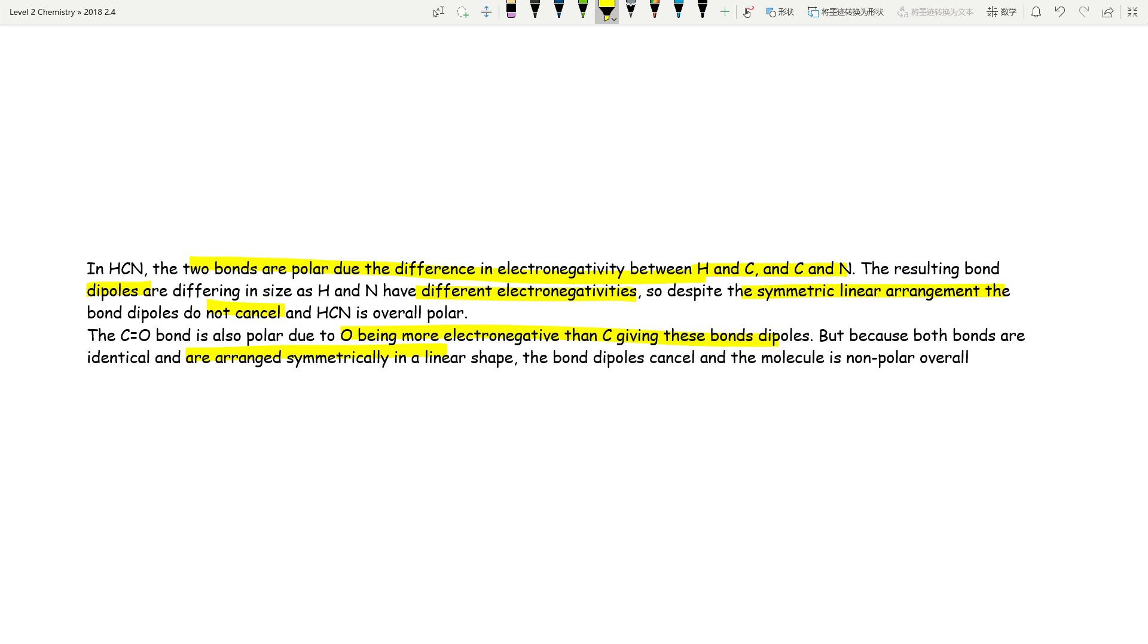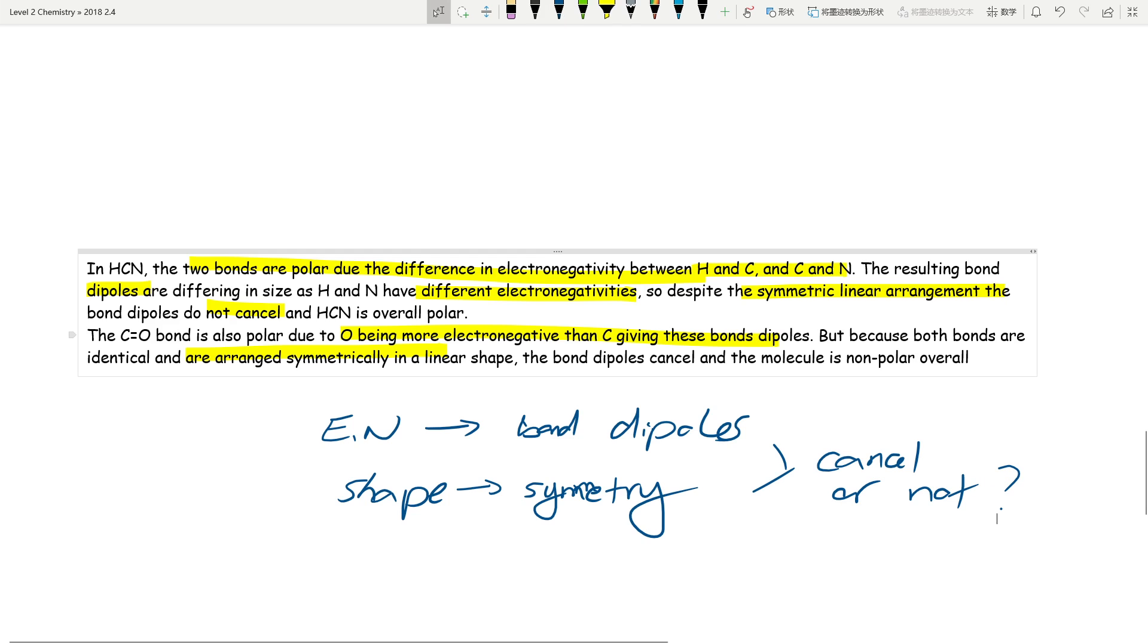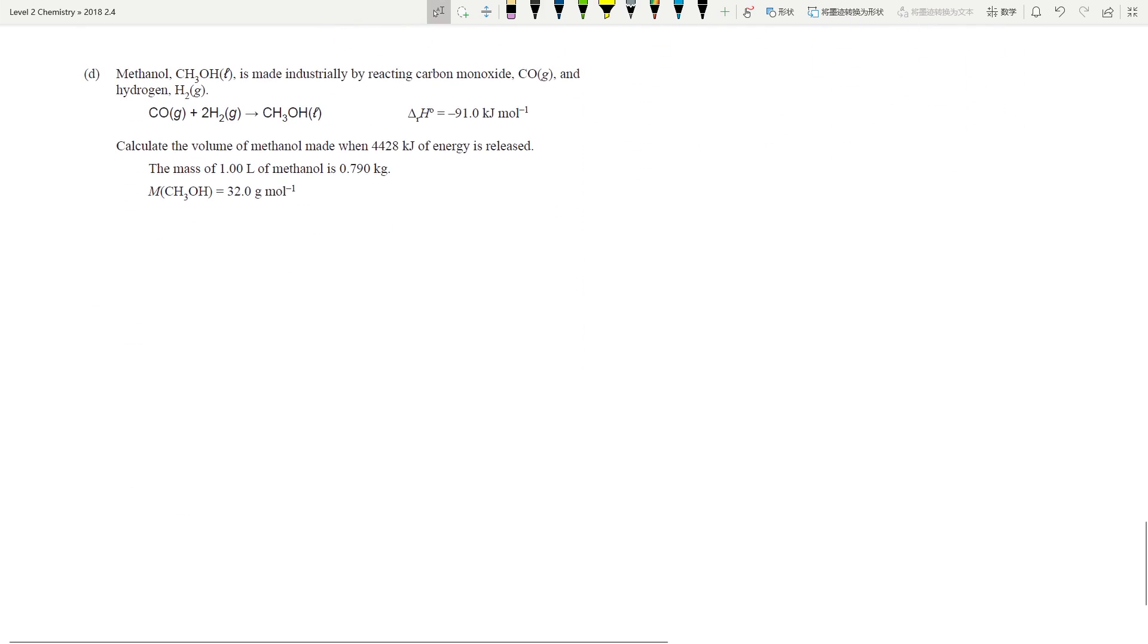But if you look at the answers, you do need to talk about the electronegativity difference because I just abbreviated it. So you need to talk about the significant electronegativity difference between CH and CN. Therefore, you've got two different types of dipoles, two different electronegativities. So even though you have a symmetrical shape, they don't cancel out. But the other one, yes, it's more electronegative. You have bond dipoles, but because they are arranged symmetrically, they do cancel out. So the key word that you're looking for, guys, you always want to talk about electronegativity difference creating bond dipoles. And then you are going to tell us the shape and if it's symmetrical or not. And then you need to explain to us, do they cancel or not? And then if it cancels, it's non-polar. If it doesn't cancel, it's polar.